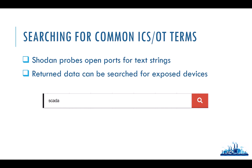Moving past tags and enterprise accounts — what can we do with a free account or a lower cost tier? One of the things we can do is run searches for common ICS-OT terms. You can search for ICS and OT and they will return results. ICS is much more specific than OT, which can be a bit more generic.